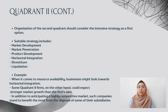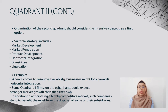Organizations in the second quadrant should consider intensive strategy as a first option, since they are in a rapid market growth industry. Suitable strategies include market development, market penetration, product development, horizontal integration, divestiture, and liquidation. When it comes to resource availability, businesses might look towards horizontal integration. Some quadrant two firms could also benefit from the disposal of some of their subsidiaries to anticipate a highly competitive market.